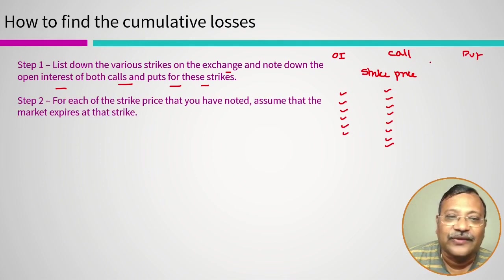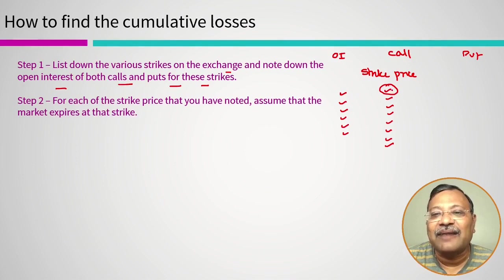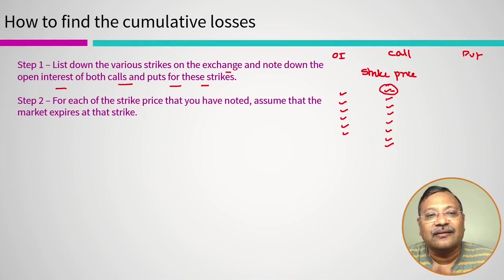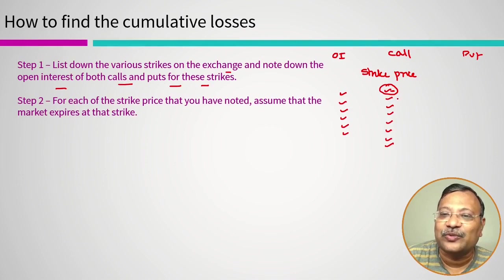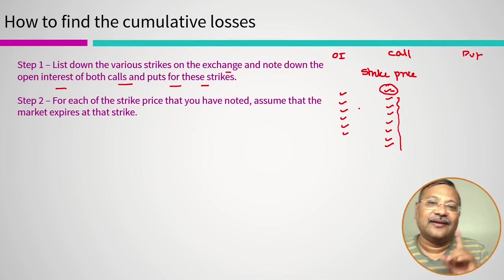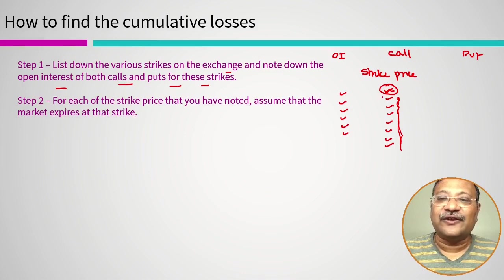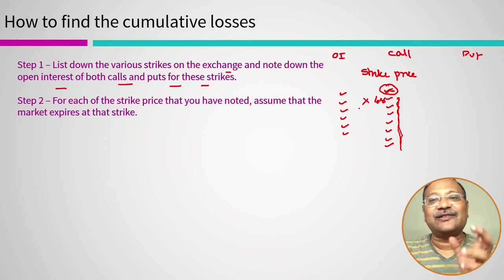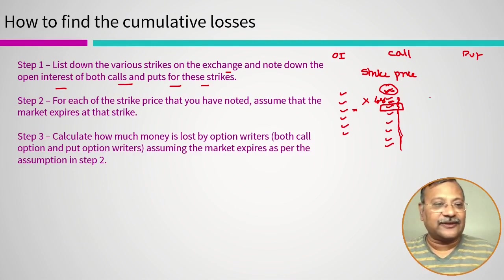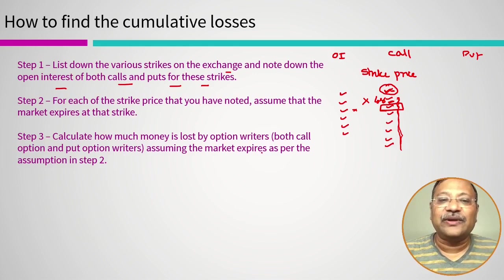Step 2: For each strike price, assume the market expires at that strike price and calculate what losses the option writers would incur. If we presume the market expires at a particular level, we calculate the total losses that sellers of calls will experience at all other levels — loss per unit times open interest equals total loss at that level. We do this for puts as well. Step 3: Calculate how much money is lost by both call and put option writers assuming the market expires as per the assumption in Step 2.